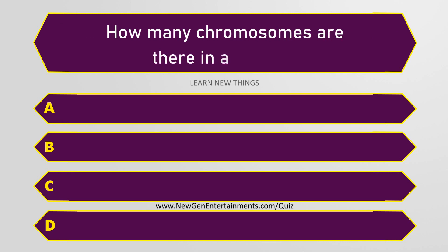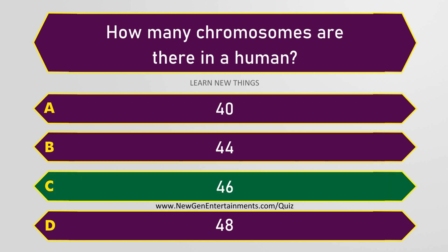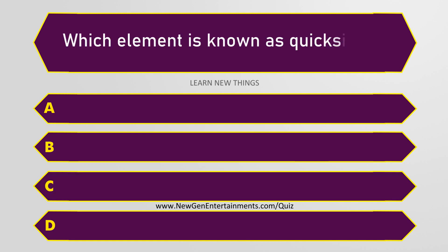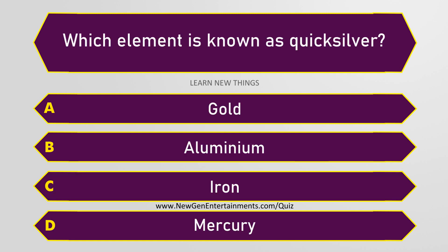How many chromosomes are there in a human? 46. Which element is known as Quicksilver? Mercury.